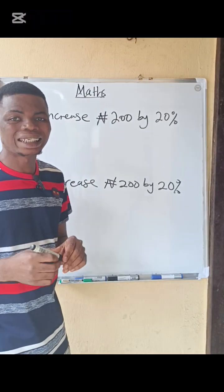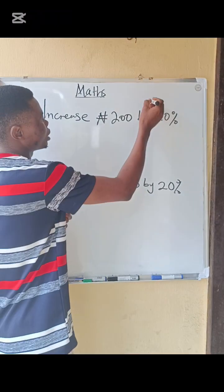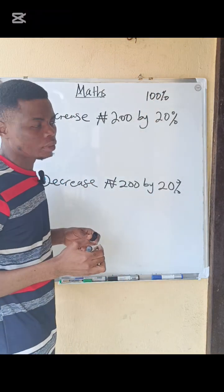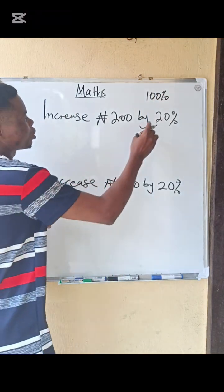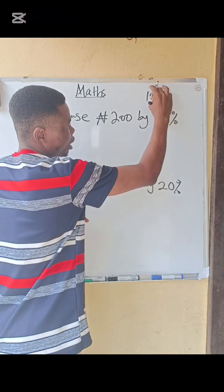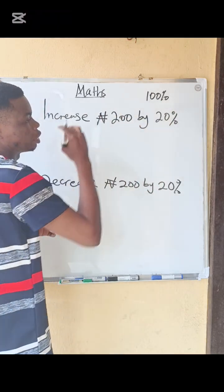Remember that the standard percentage is 100%. So what do we do? It means that you should add this 20% to 100% and divide by 100, then multiply with the number.